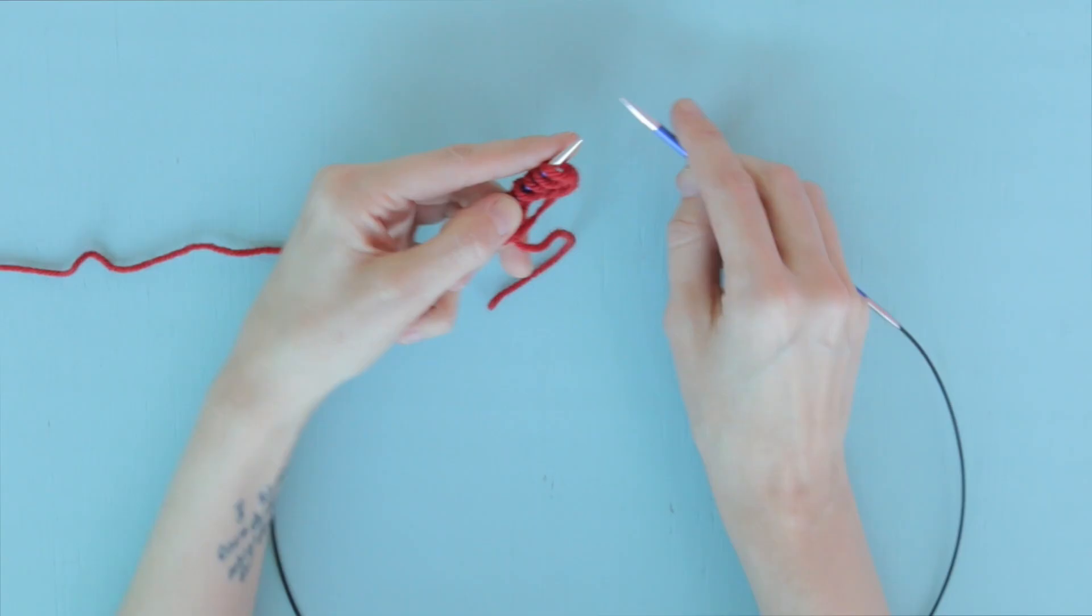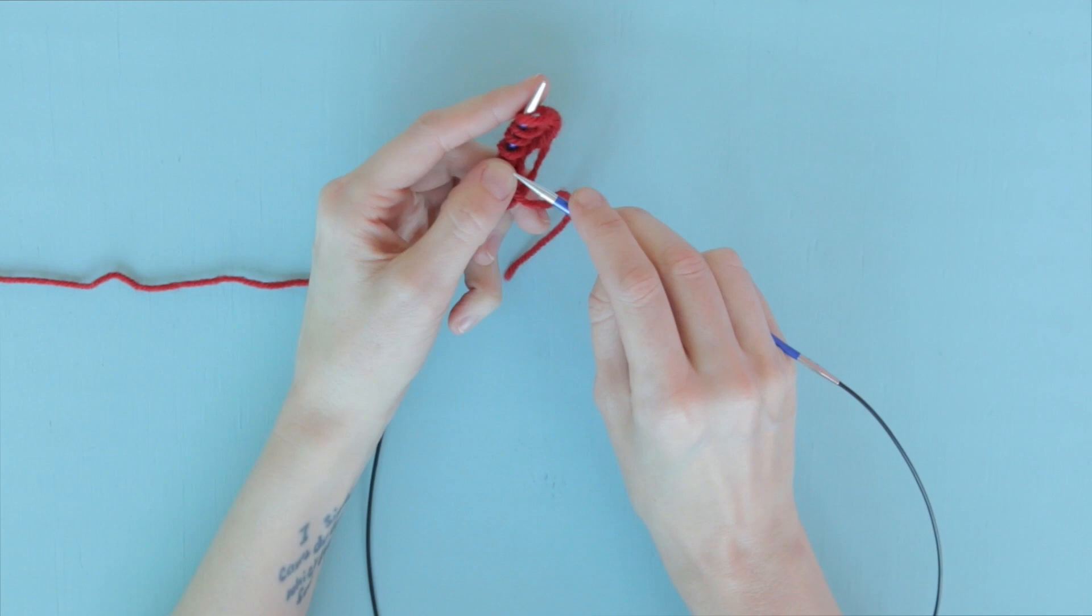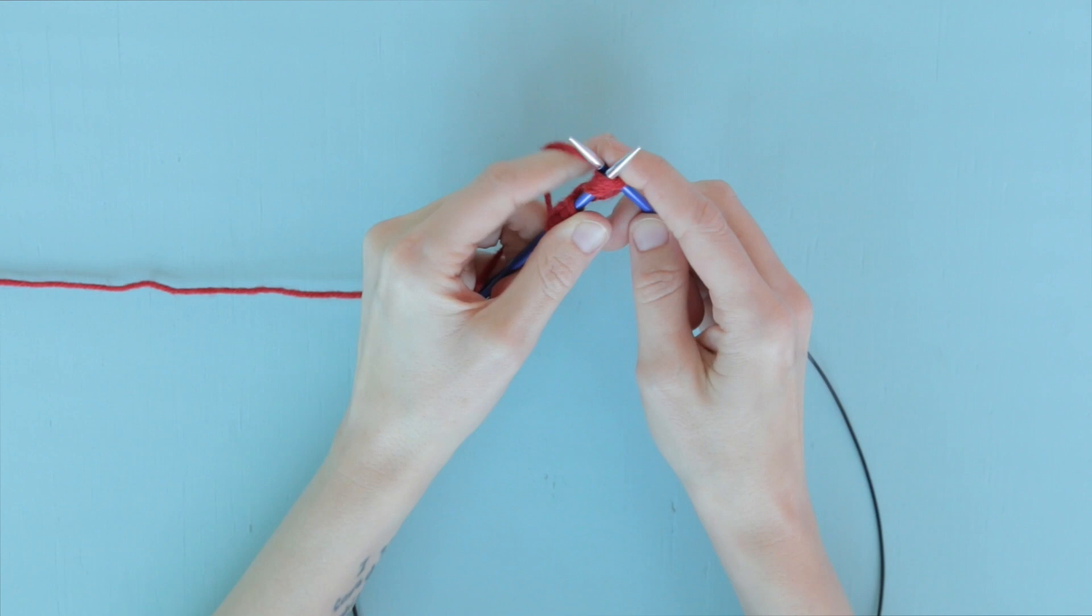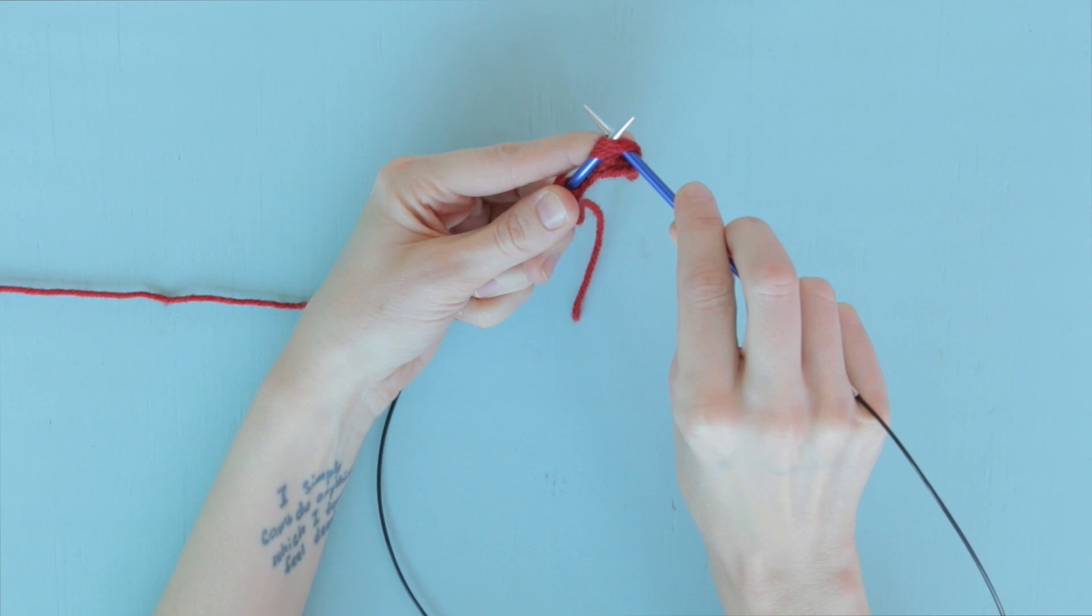Next, we're going to take all four of these loops as if they are one stitch. So we are inserting from front to back, knitwise this is called. We're inserting our right hand needle knitwise through all four of those long loops, right through the middle of it. You need to make sure you're catching all four of those loops at one time and that you're not splitting any of your yarn in the process.